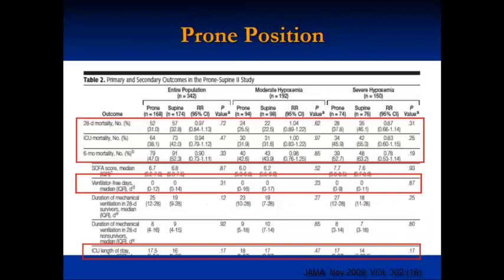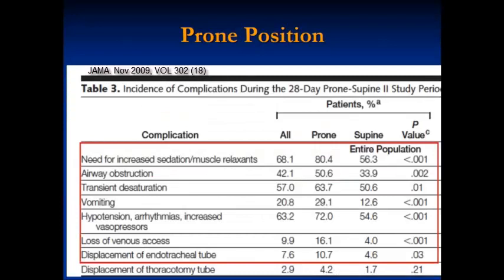From the 2009 trial, there was a difference in the need for sedation between prone and non-prone groups, as expected. Vomiting and pressure wounds were also more common with prone positioning. These are the expected complications when patients receive prone positioning.